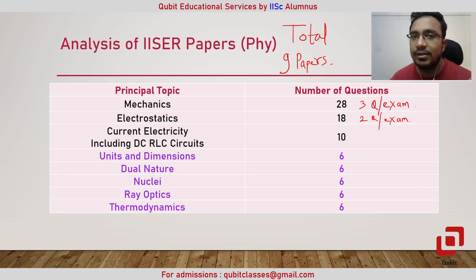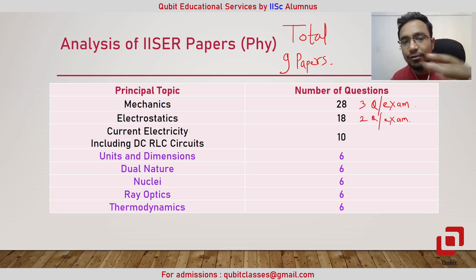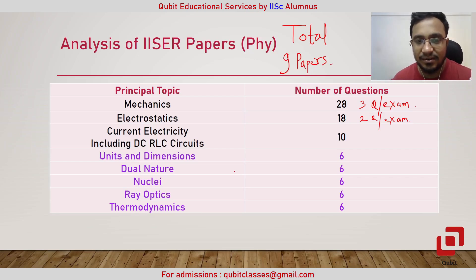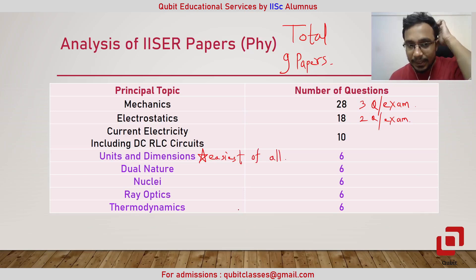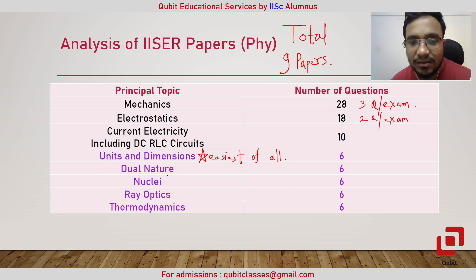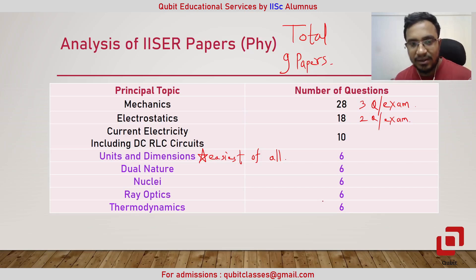Current electricity has been the third most popular topic. After that, the remaining topics each have about one question in alternate years. Units and dimensions is perhaps the easiest topic in physics. Then we have dual nature of radiation and matter with six questions, nuclei with six questions, ray optics with six questions, and thermodynamics with six questions.